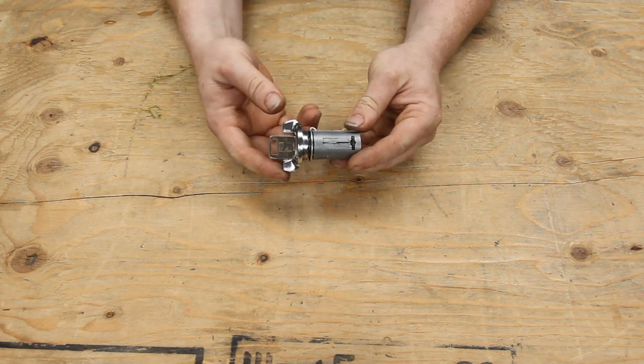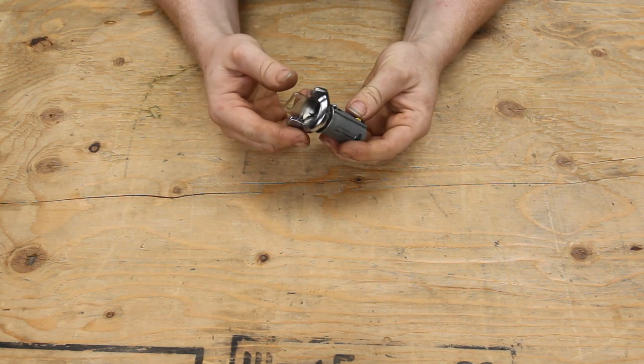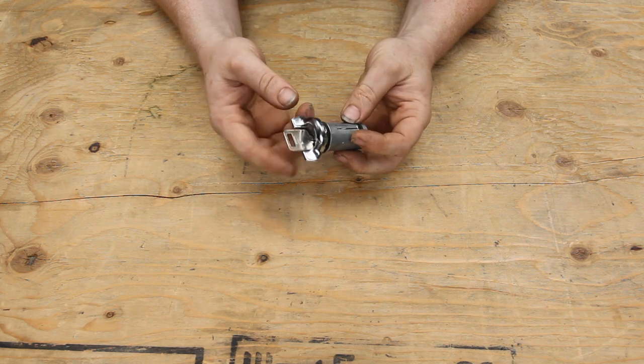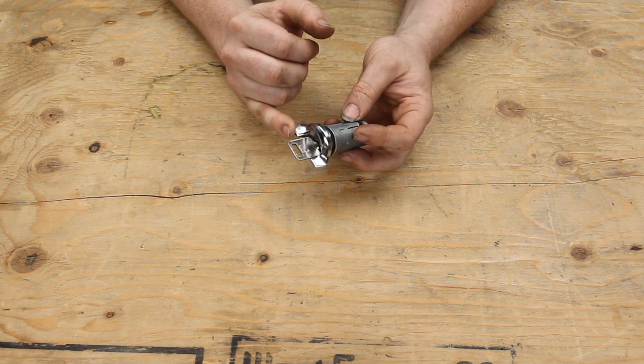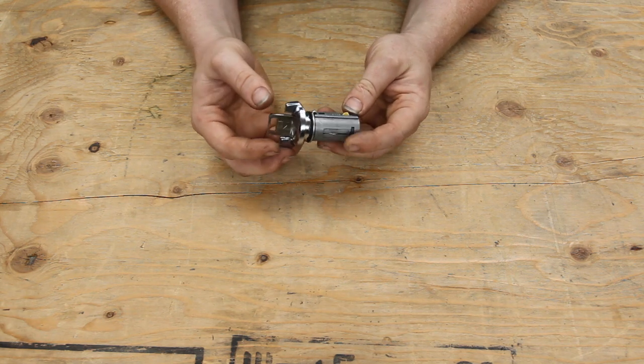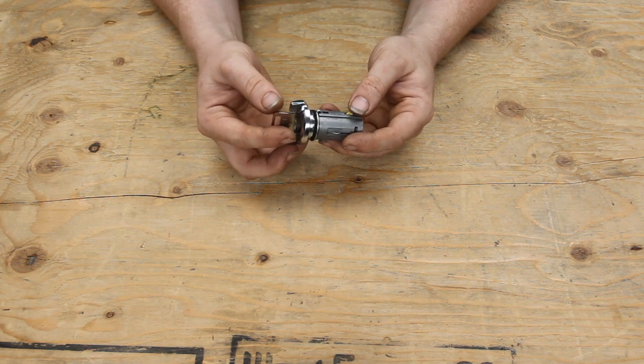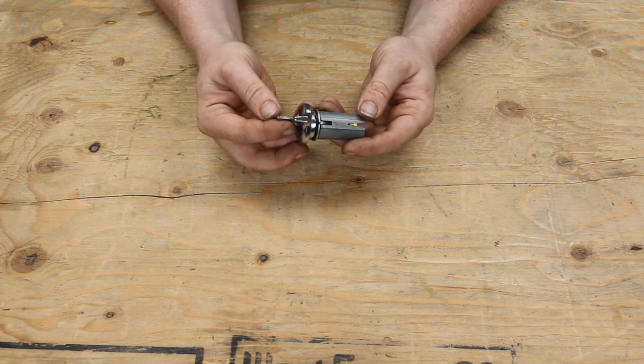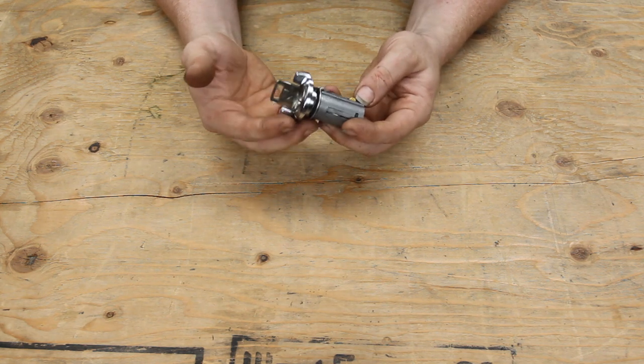All right, so what we have here is a lock cylinder assembly out of the AMC Eagle. It even has the American Motors logo right here on the key. Now, this lock cylinder is old, and as a result it's been giving me problems that beyond lubrication are not going to work for me. These will just quite simply wear out.